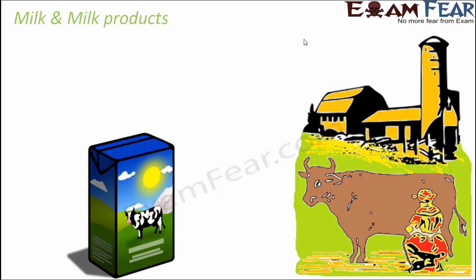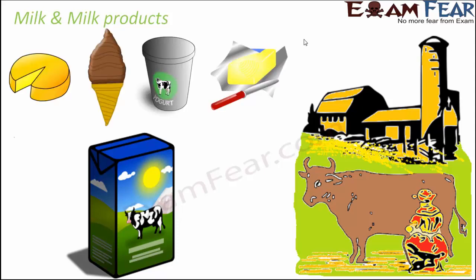It is important to maintain cleanliness so that the animals do not get diseases, because if an animal is diseased, the milk obtained can also be harmful for consumption. Regular visits by veterinary doctors are essential to keep the animals healthy. Once we get milk, a lot of products can be obtained from it — for example, cheese, butter, yogurt, and ice cream. A huge number of milk products can be obtained and they are all consumed by us.